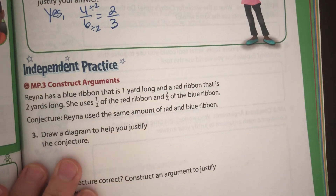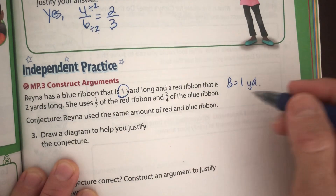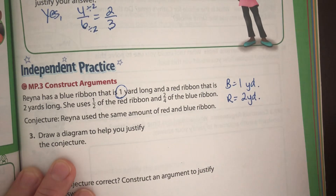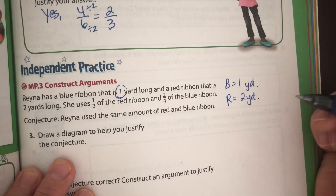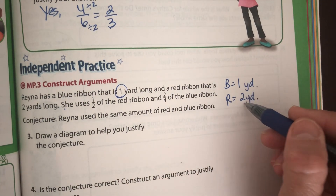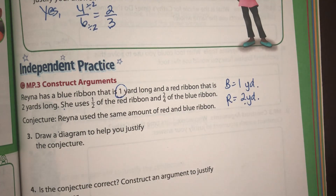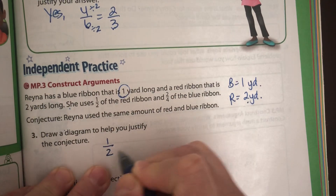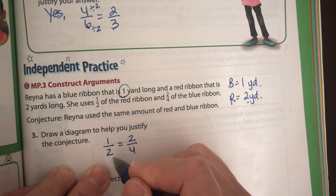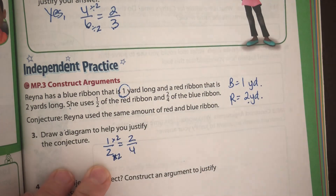Raina has a blue ribbon that is one yard and a red ribbon that is two yards. We need to right away know we are not comparing the same-size whole — that's a big difference. She uses half of the red and two-fourths of the blue. The conjecture is that she used the same amount of red and blue. Now, one-half is equal to two-fourths — which is actually true, because if you multiply numerator and denominator by two, two-fourths is the same as one-half.